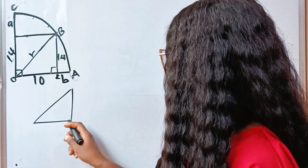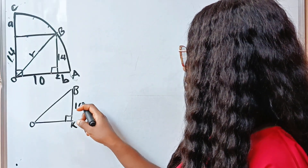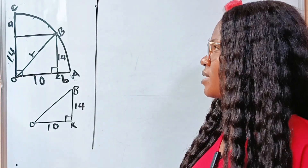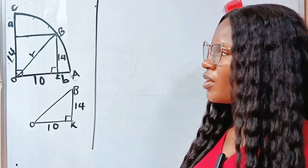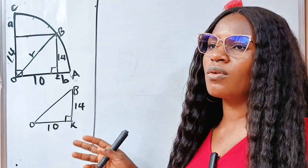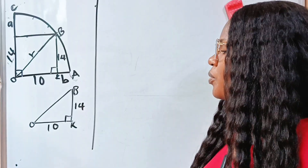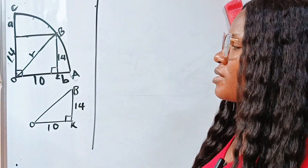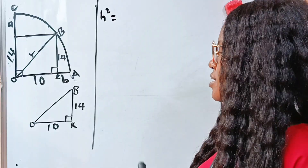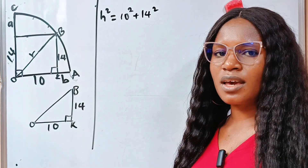So let's draw that out. This is O, this is B, and this is K. Here is 14 and here is 10. When looking for one side of a right-angled triangle, we use the Pythagorean theorem. Since two sides of this triangle are given and we are looking for the hypotenuse — the side facing the right angle — we use the Pythagorean theorem to get the hypotenuse.